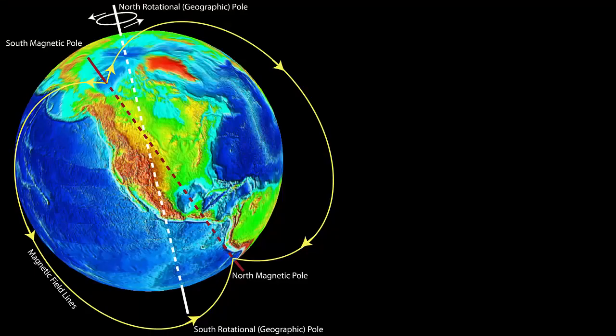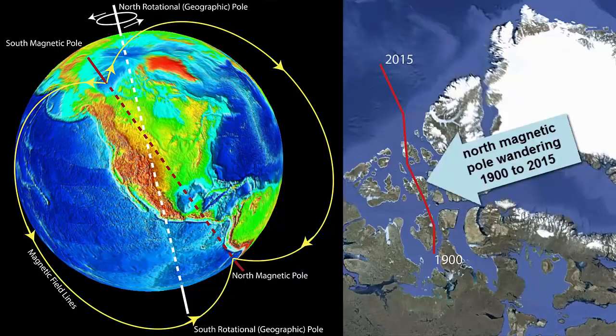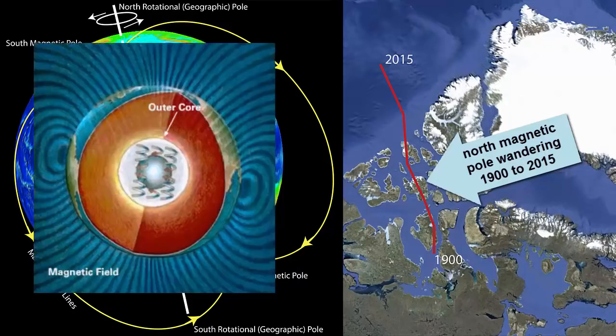Earth's magnetic field is oriented pretty closely with its rotational north pole, but not perfectly. And that pole wanders around. Why?